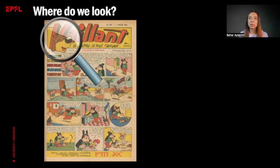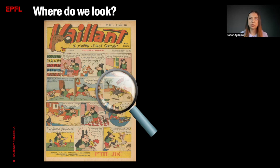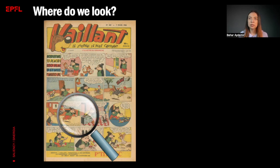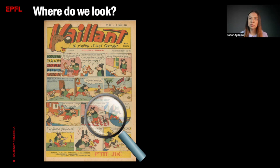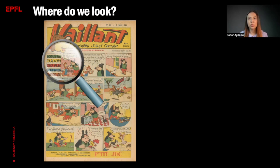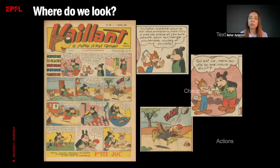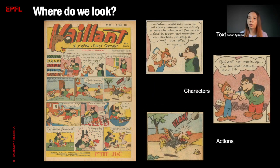While reading, it's certain that some places will stand out from the others. This selection process is an attention mechanism in the human visual system to focus on the most interesting or informative areas in our field of view. In comics, we look at the texts, characters, and actions more than the other regions.